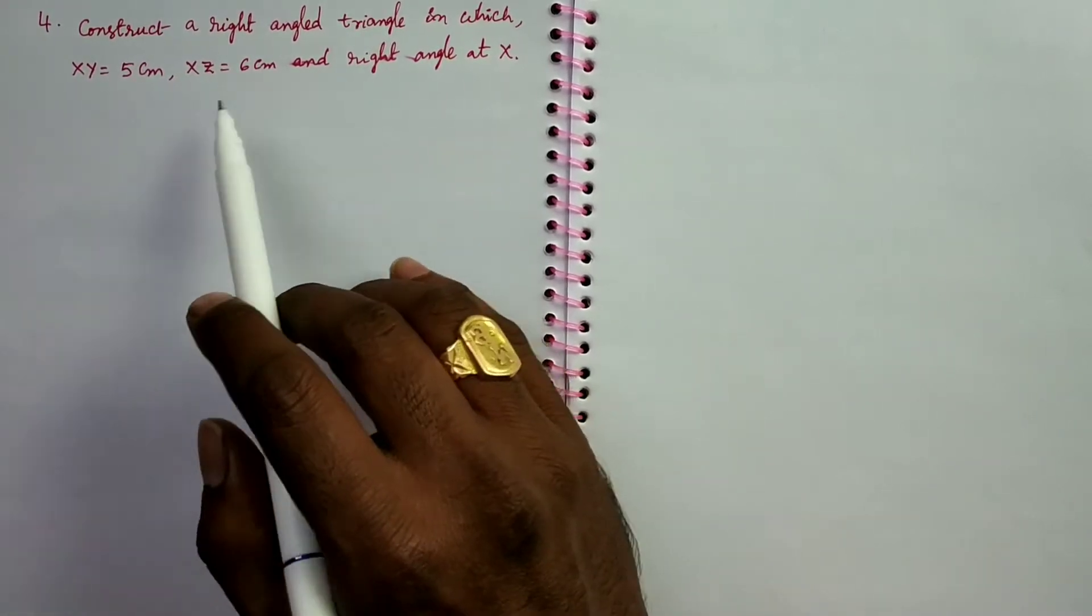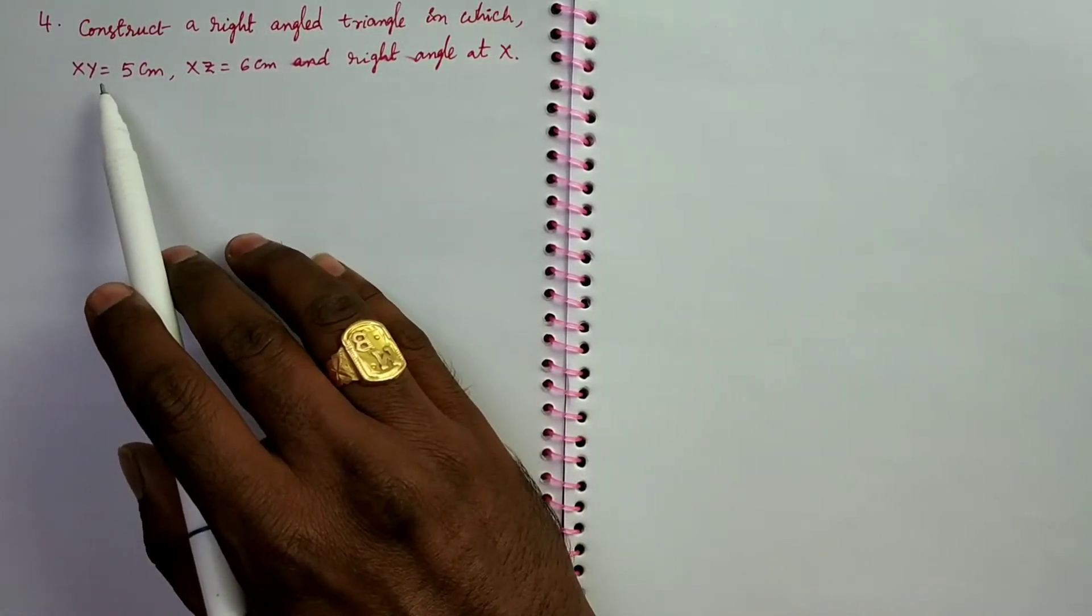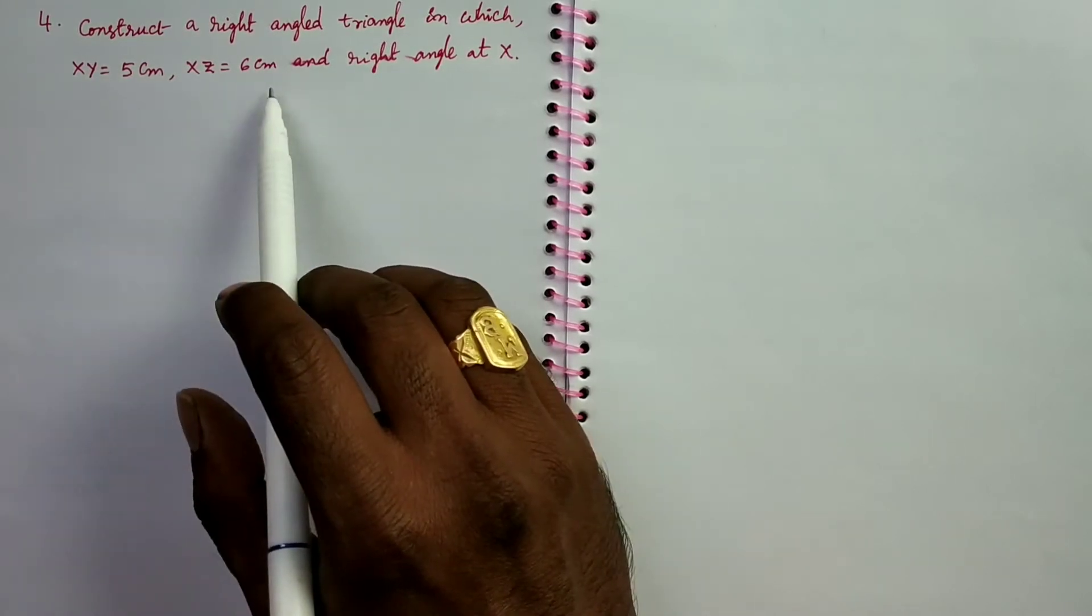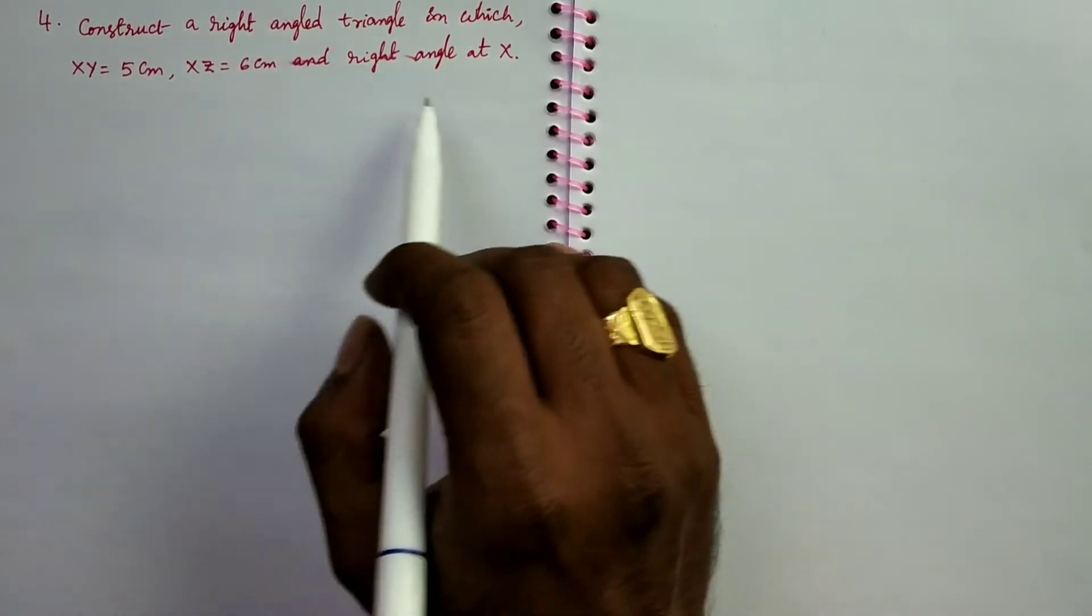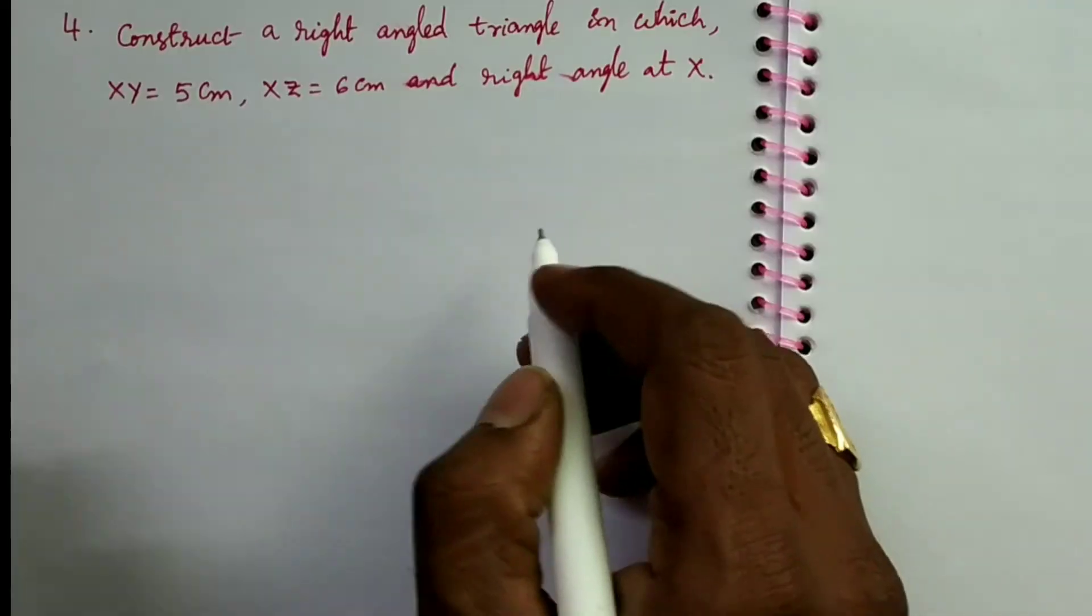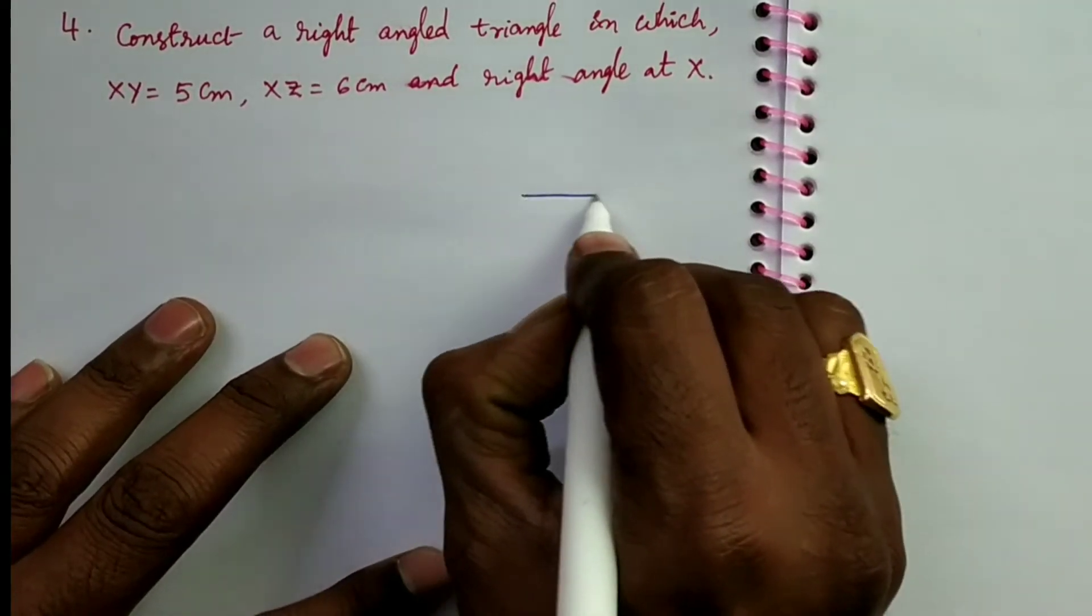We can take the base as XY or XZ also. No problem. I prefer XY as base, so XY 5 cm. This is the rough diagram.